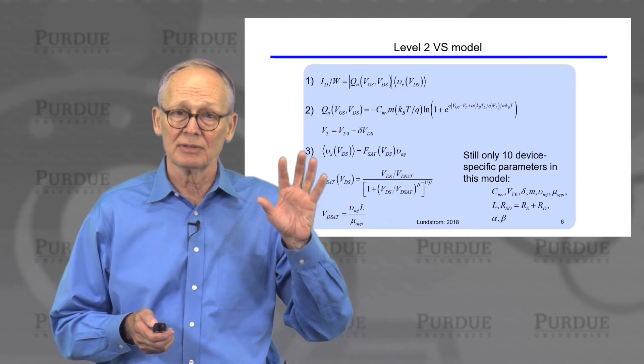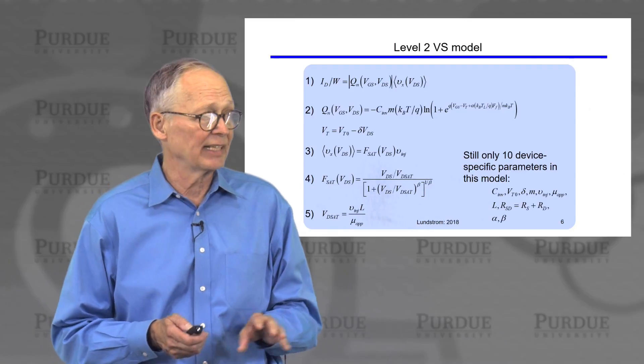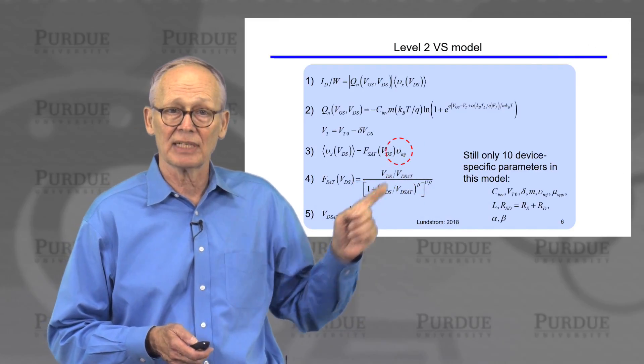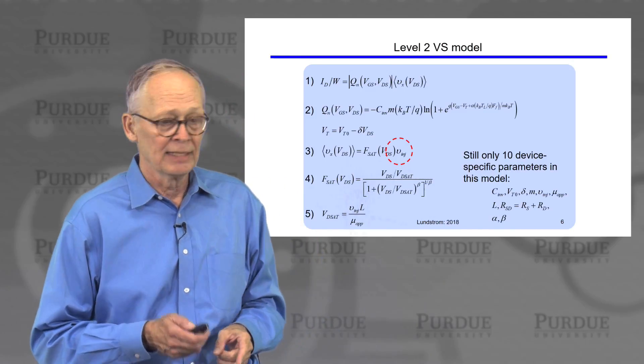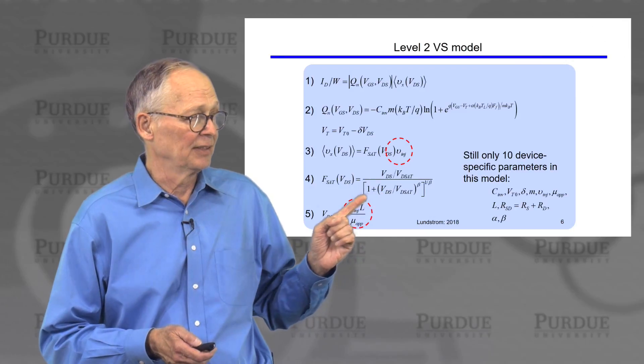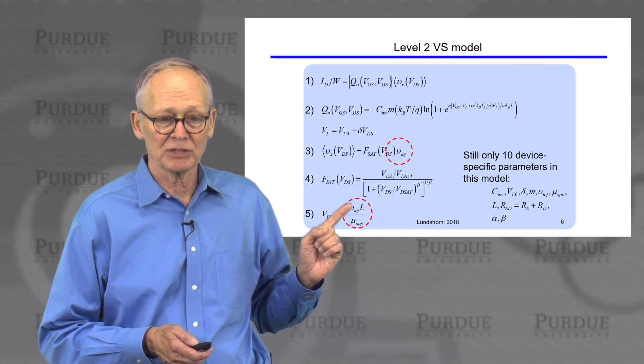So our level two virtual source model is virtually identical. We simply replace the high field saturation velocity by this ballistic injection velocity.